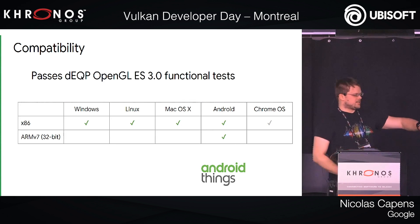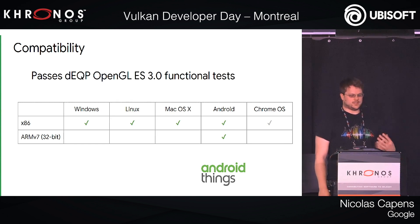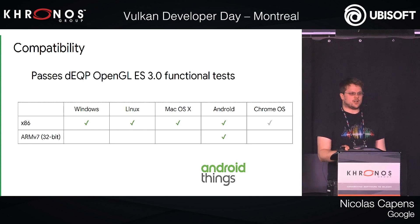For something like a watch, it doesn't really have a big need for powerful 3D, but you can save the cost of a GPU by running SwiftShader.